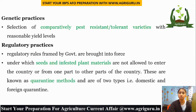Regulatory Practices: regulatory rules framed by the government are brought into force, which are essentially quarantine methods. Under quarantine, seeds and infested plant materials are not allowed to enter the country or to move from one part to another part of the country. These are of two types: domestic quarantine, which is within the country or within a state, and foreign quarantine, which is between countries or between states.